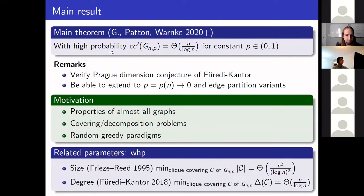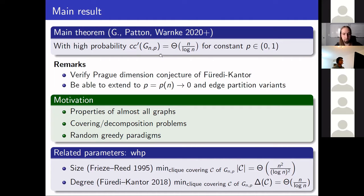We prove this conjecture by showing that with high probability the clique chromatic number of G(n,p) is of order n over log n for all constant p, verifying the product dimension conjecture by Foudie and Counter. We can extend this result in two directions. First, not just for constant p, we can allow p to go to zero as n goes to infinity. Second, we can require the clique covering to be a clique partition — a collection of cliques covering all edges of G(n,p) where edges in different cliques are edge-disjoint — yielding a stronger edge-partition variant.